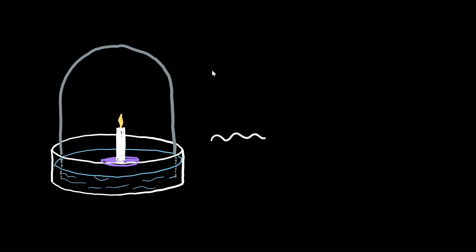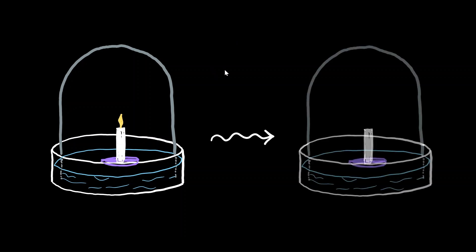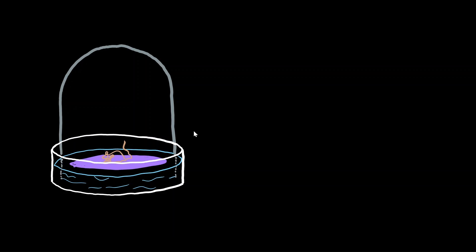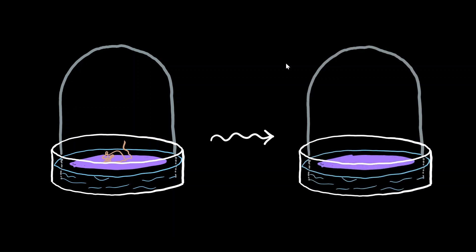Within the dome, after some time, he noticed that the candle got extinguished. He tried to light the candle again without lifting the bell jar, using a magnifying glass to focus sunlight onto the extinguished candle, but he was unable to do so. He repeated the experiment, but this time placed a mouse on the island. He realized that after some time, the mouse had died.